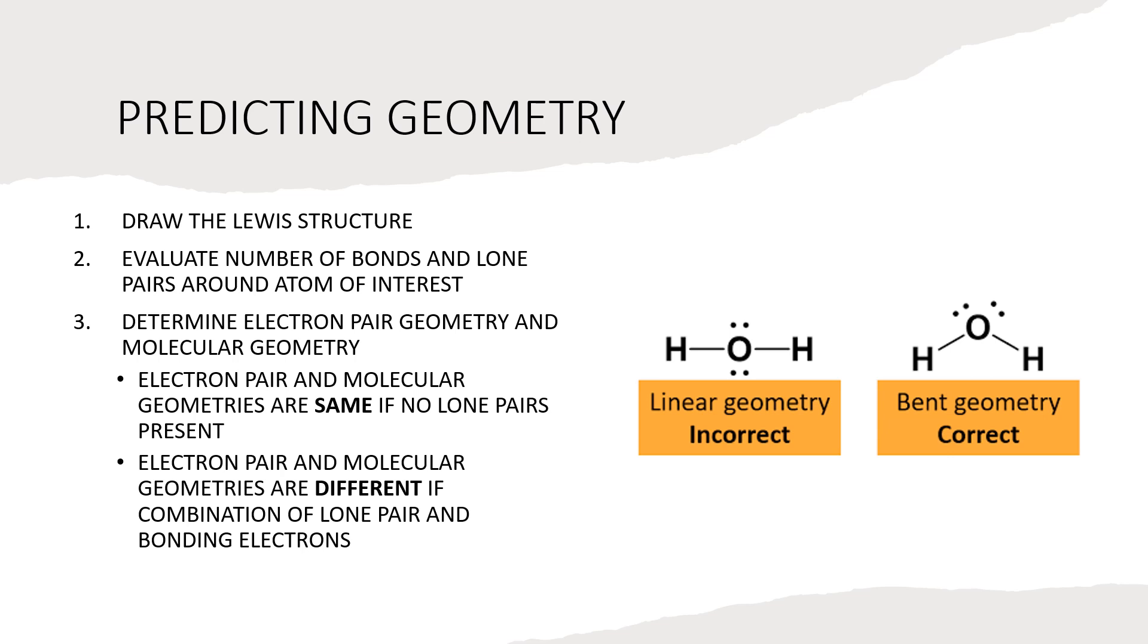So let's just look at a simple example. For example, we might be tempted, if we just drew a Lewis structure of water, to think that this molecule has linear geometry. But since we know, in the case of water, it has two lone pairs and then two bonds, it should be pretty easy for us to recognize at this point that this is tetrahedral geometry. And then if we think about the tetrahedron and what happens if these two lone pairs are occupying two corners of our tetrahedron, that the remaining molecular geometry must be bent. So this is the kind of strategic thinking that you have to employ to get to the right place.